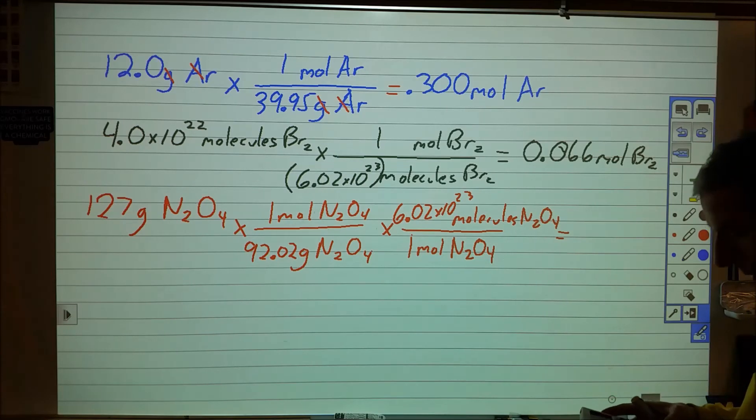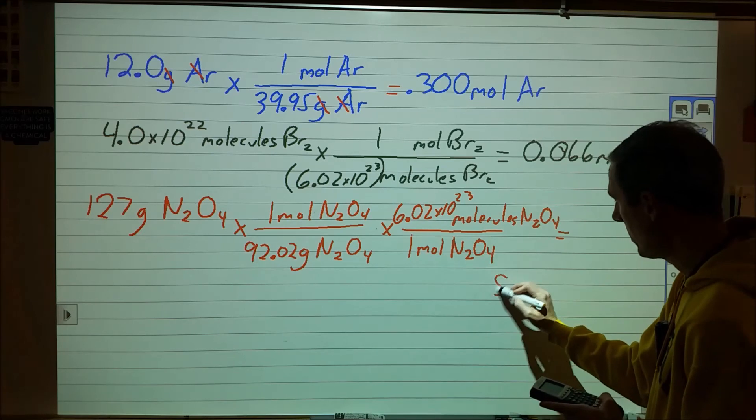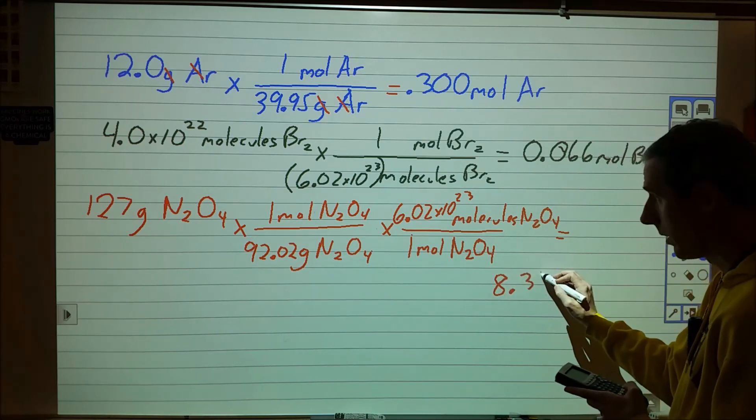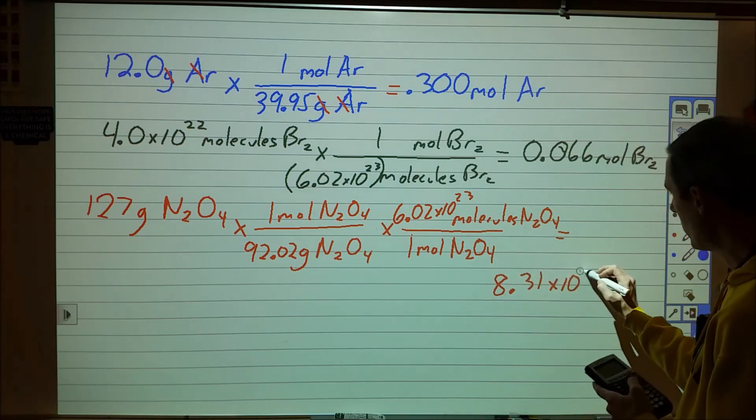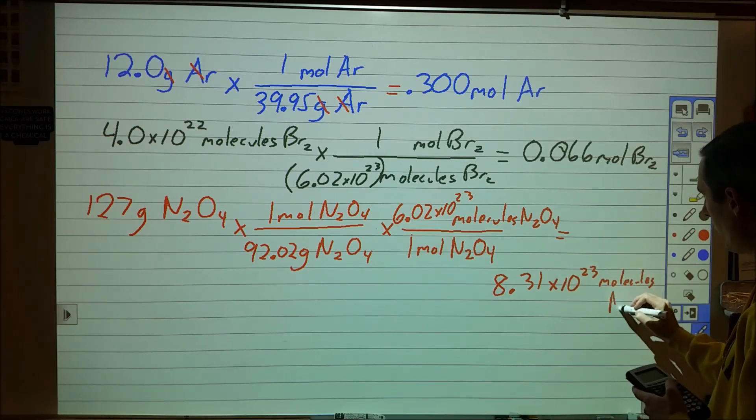All right. So I would go ahead and do 127 times 6.02 times 10 to the 23rd, and then I would divide by 92.02. And that gives me 8.31 times 10 to the 23rd molecules of N2O4.